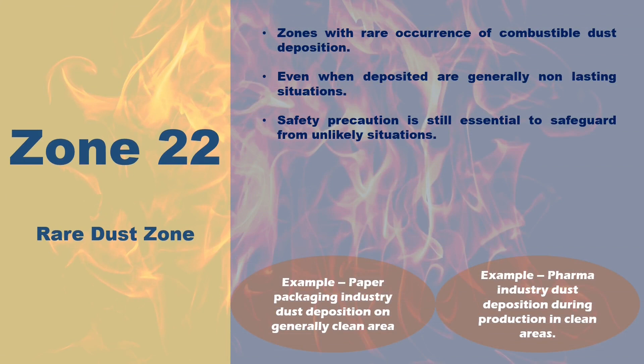Zone 22 is an area where the presence of combustible dust is not expected to be frequent or long-lasting; when it does occur, it will usually be a temporary condition. Examples include pharmaceutical companies, which are generally kept clean but where dust can accumulate during long production runs. A similar situation may arise in the paper packaging industry, where paper dust could be deposited in generally clean areas over time — these also present potential hazards.